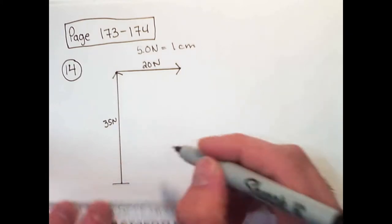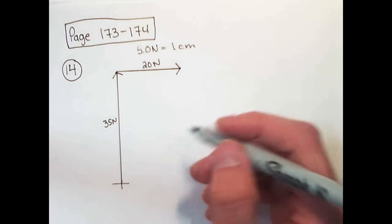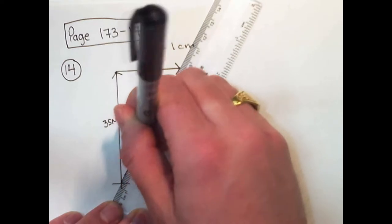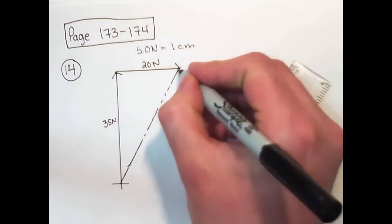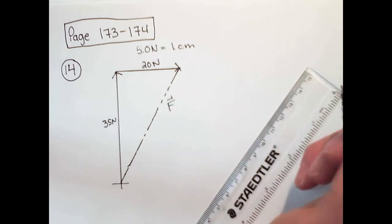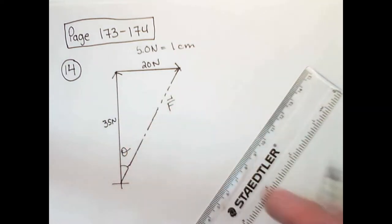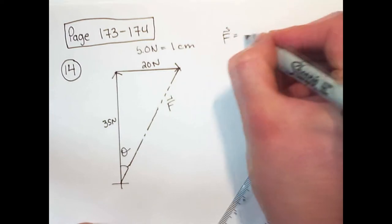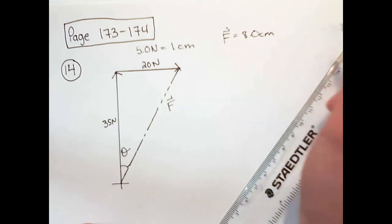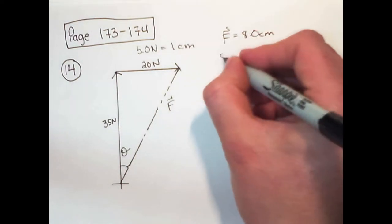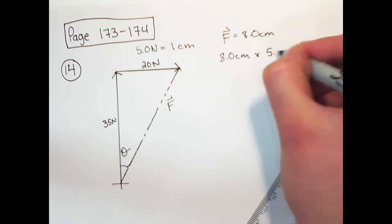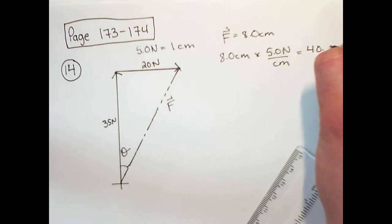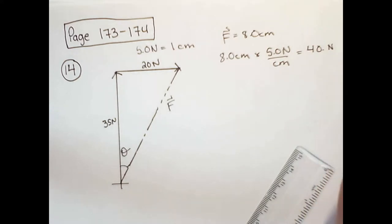I'm going to put a little axis at the bottom so we can easily measure it. The resultant vector starts at the bottom. I start by measuring the force, which is 8 centimeters on the scale diagram. That means 8 centimeters times 5 newtons per centimeter equals 40 newtons — we only have two significant digits anyway.